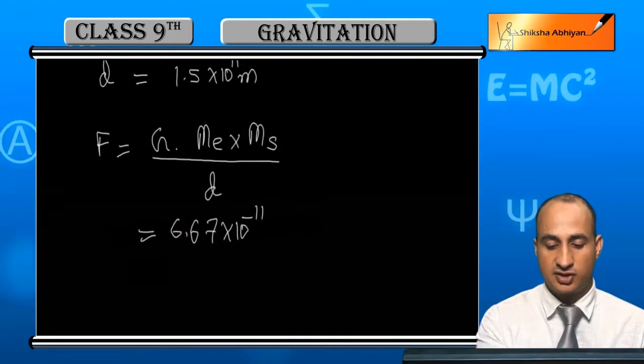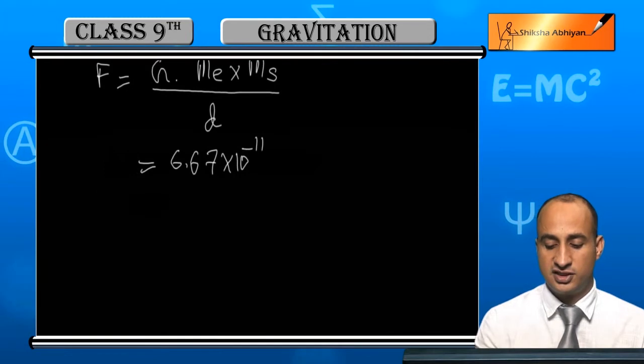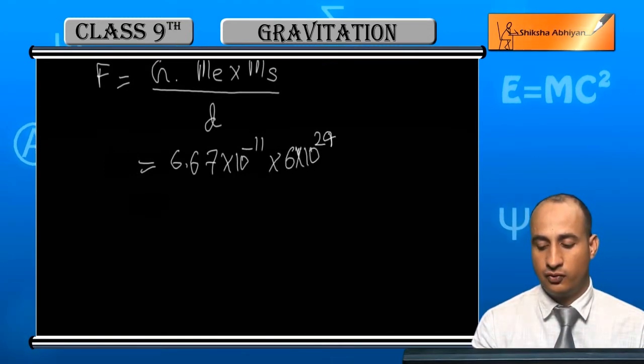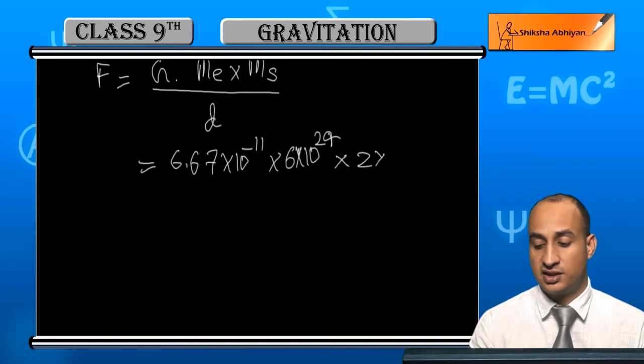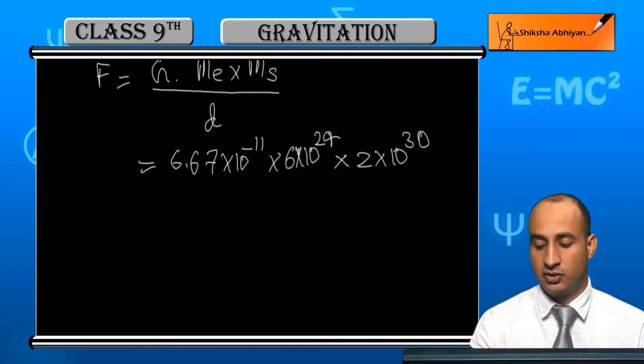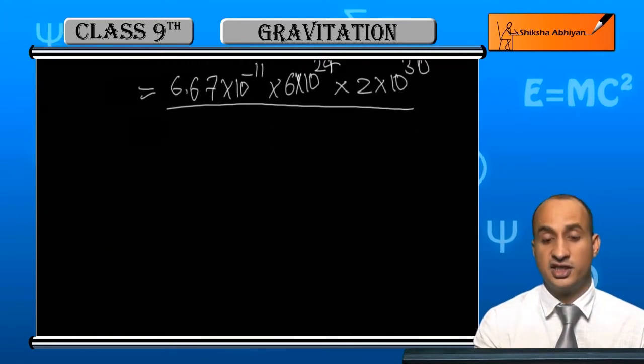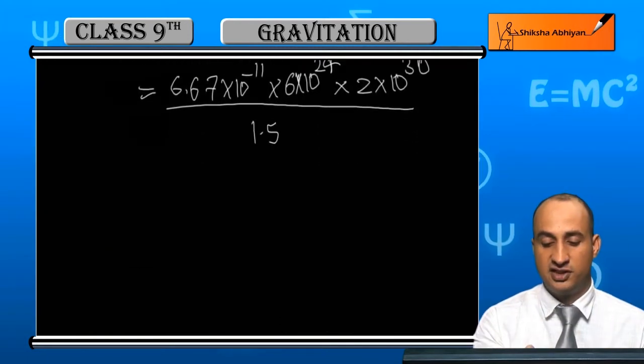Mass of Earth is 6×10²⁴, mass of Sun is 2×10³⁰ kg, and the distance is 1.5×10¹¹. You need to square the distance.